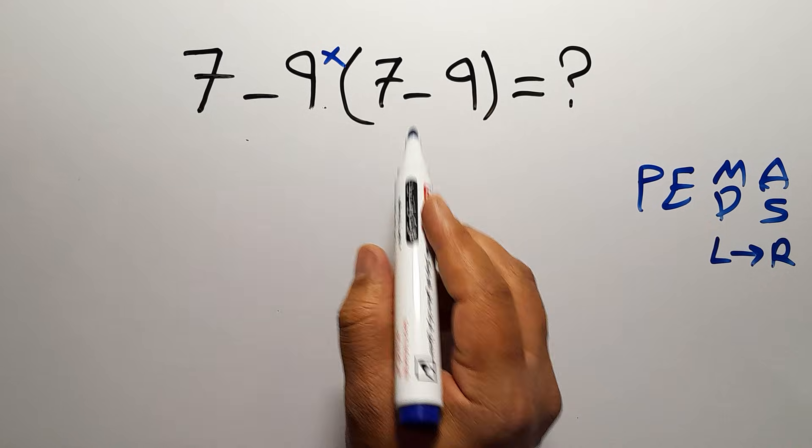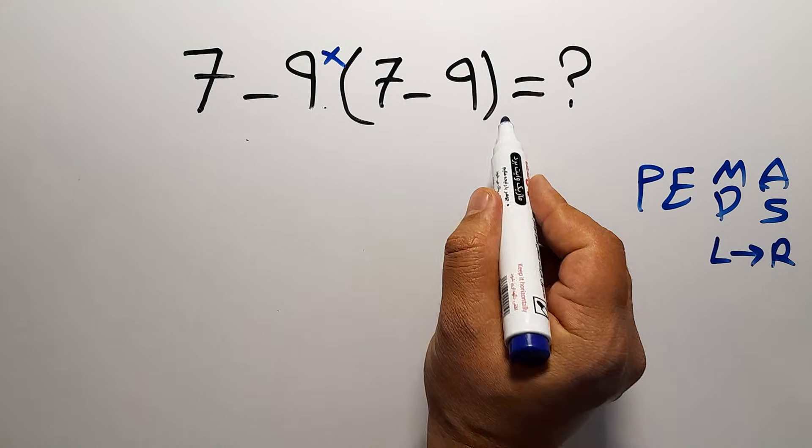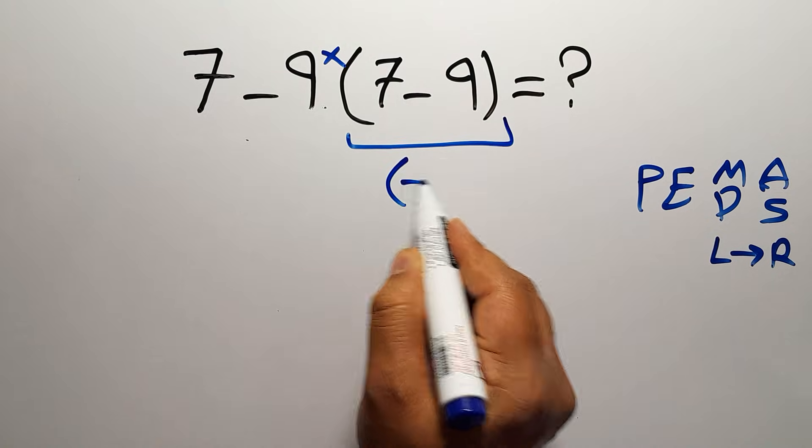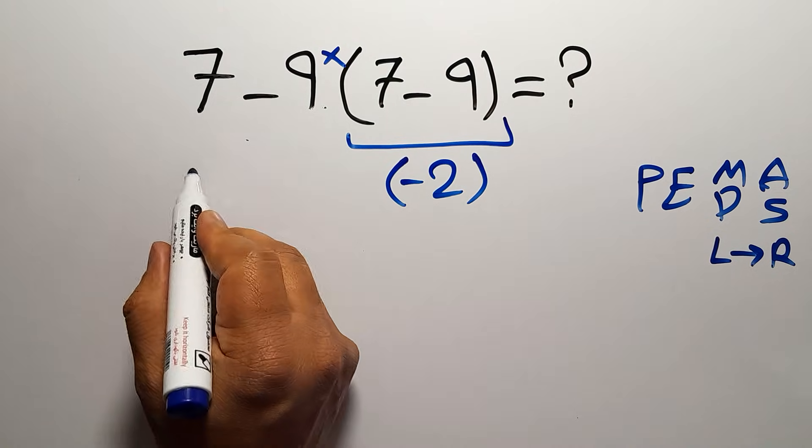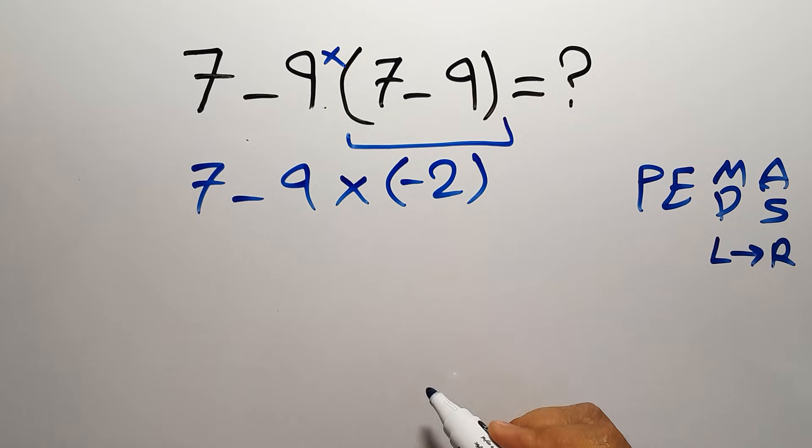Okay, let's do it. Inside this parentheses we have 7 minus 9 which gives us negative 2. So we have 7 minus 9 then times negative 2.